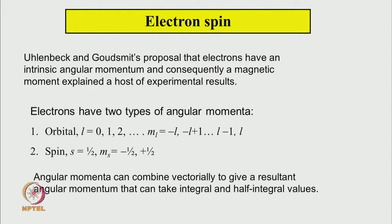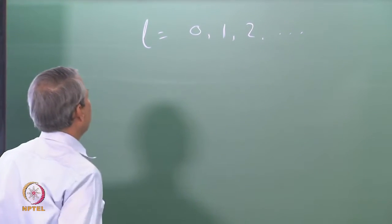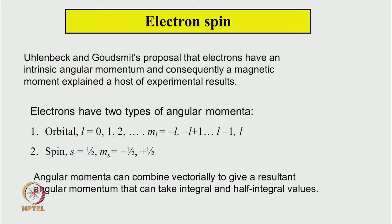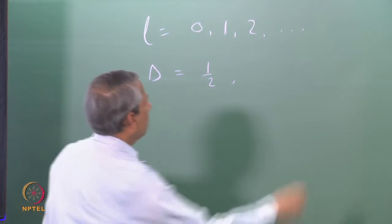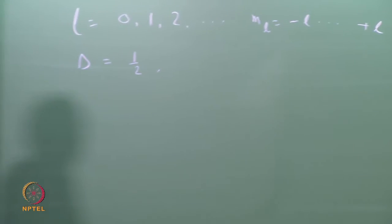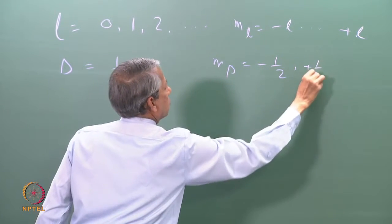Now we say that an electron can have two types of angular momentum: orbital angular momentum and spin angular momentum. According to Bohr's model, orbital angular momentum takes only integral values l, and the spin angular momentum — according to Uhlenbeck and Goudsmit — takes only half-integer values. The component of orbital angular momentum is m_l from -l to +l, and the component of spin angular momentum is m_s equal to minus half and plus half.